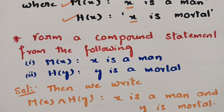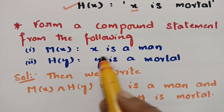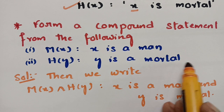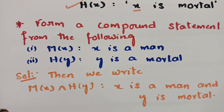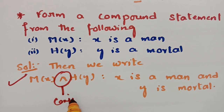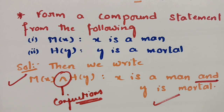Form a compound statement from M(x) — 'x is a man' — and H(x) — 'x is mortal.' Writing M(x) ∧ H(x) gives 'x is a man and x is mortal,' connected by the conjunction connective. This is a compound statement function.